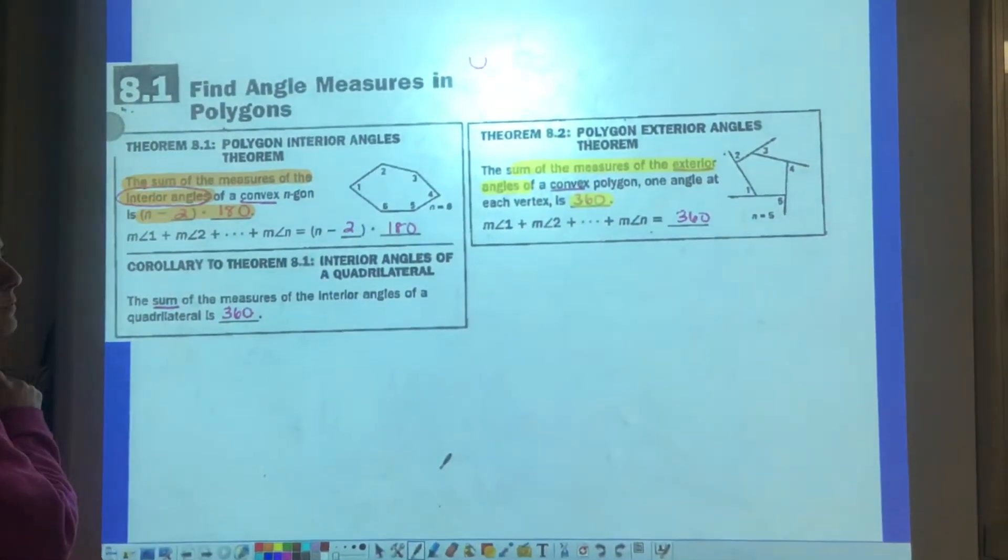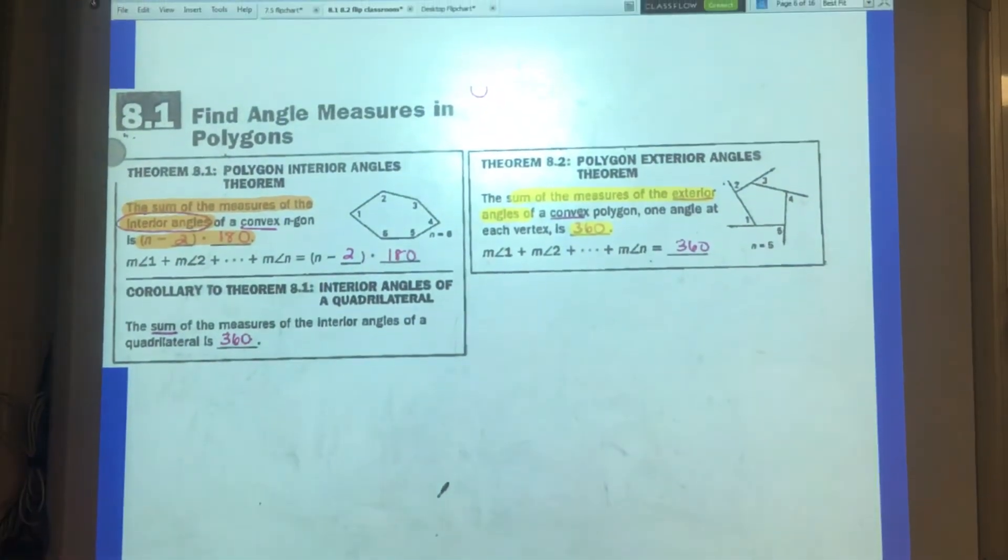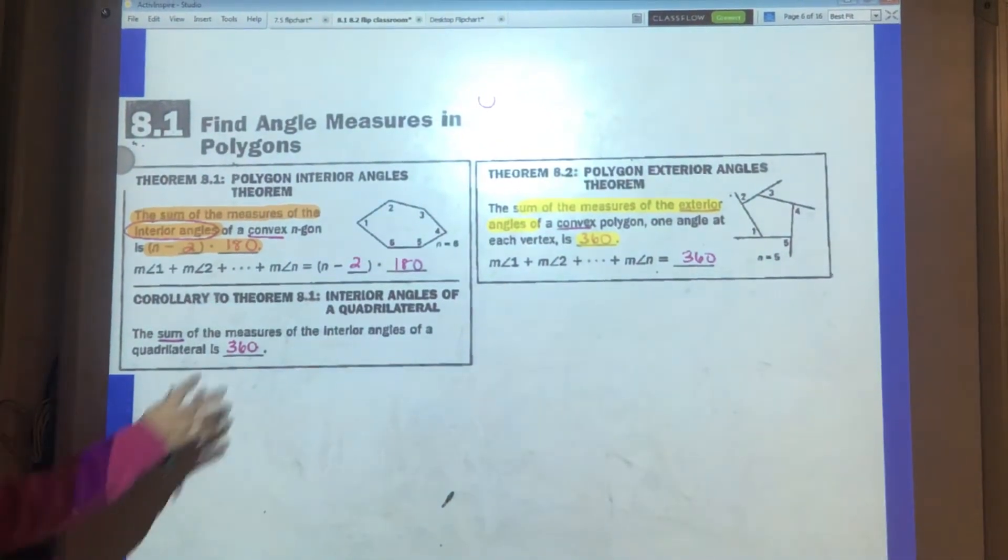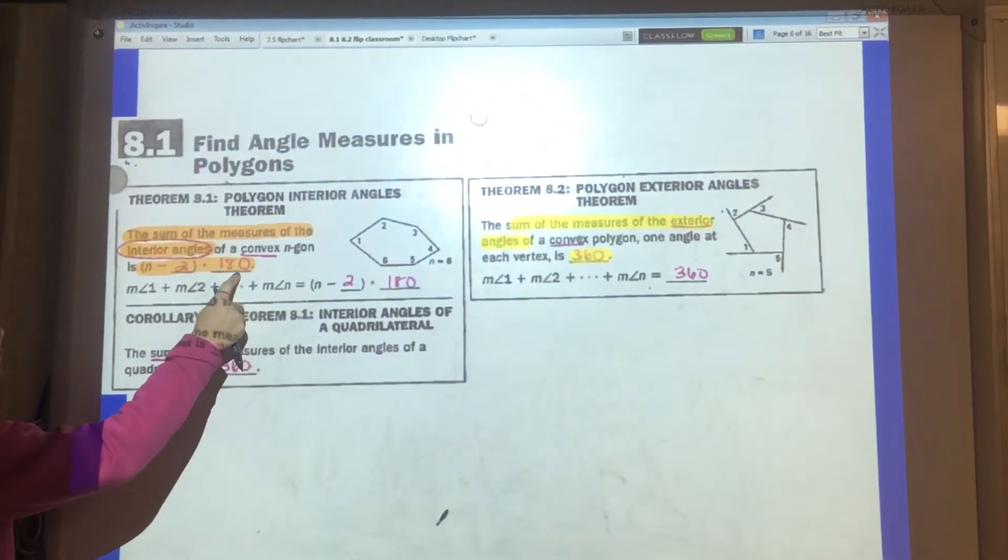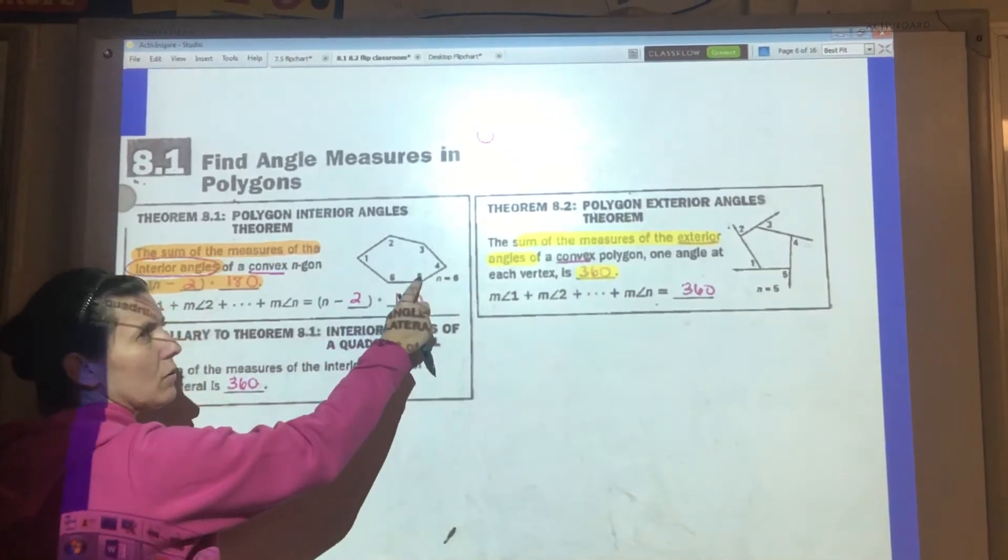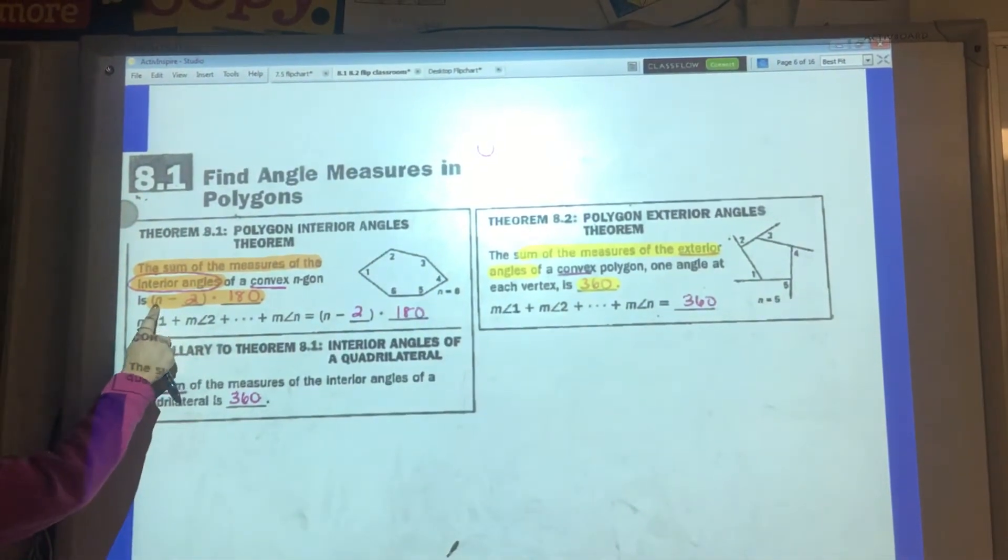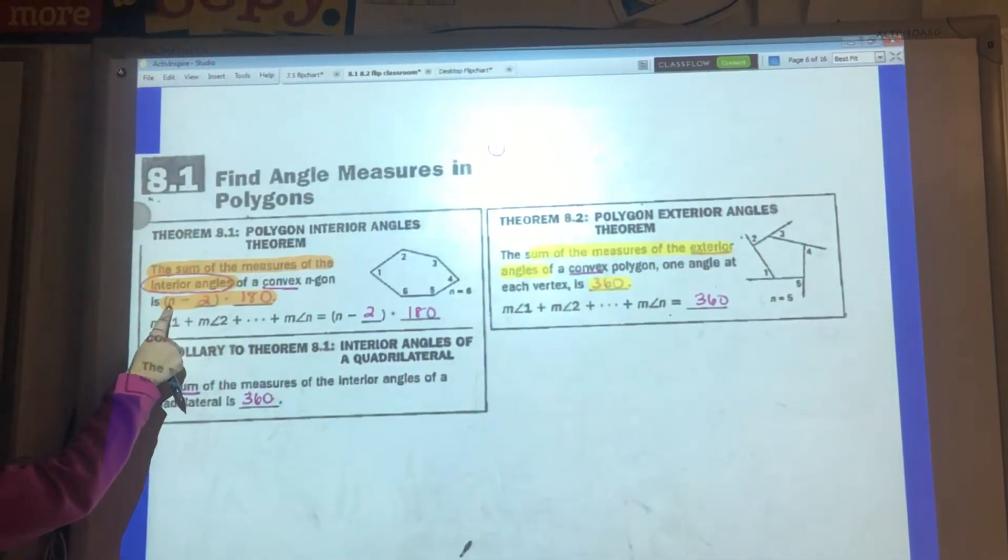First formula I want to talk about is the sum of the measures of interior angles of a polygon. This is our formula: n minus 2 times 180 gives you the sum of all these inside angles. So the n represents the number of sides or number of angles, the same thing.